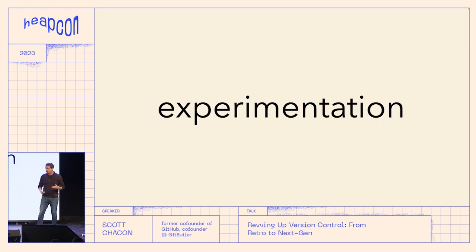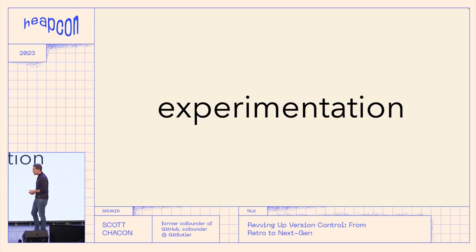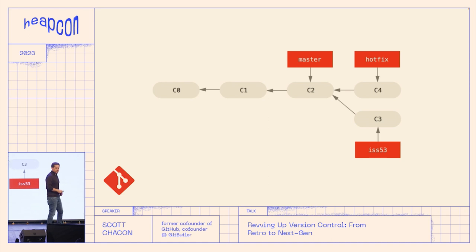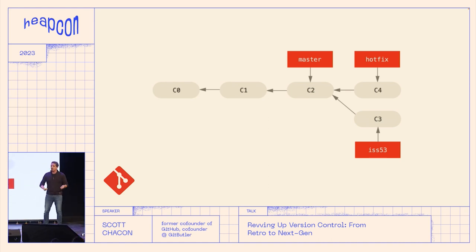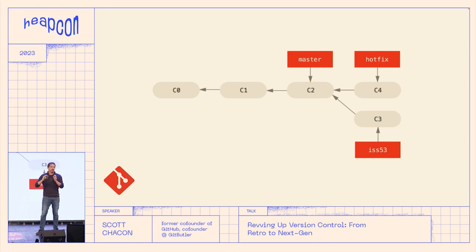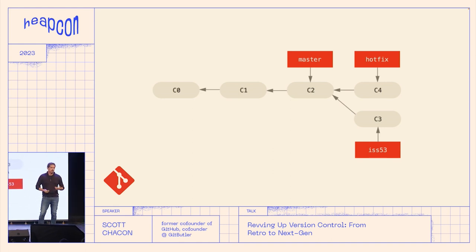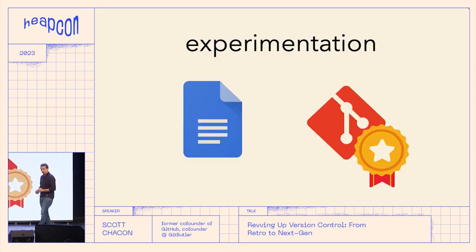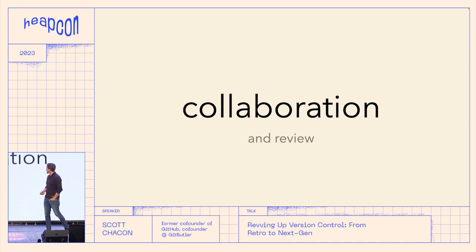The other thing version control tools help you do is experiment. Git does this with branches — you create a new branch, do some work, it's not modifying the main thing, you can do it in a safe space. You can merge it if it's great, and do reintegration merges from the main line to keep it up to date. Git is very good at experimenting on lots of different branches simultaneously. Google Docs is actually very, very bad at this — so for this one I'm going to give it to Git.